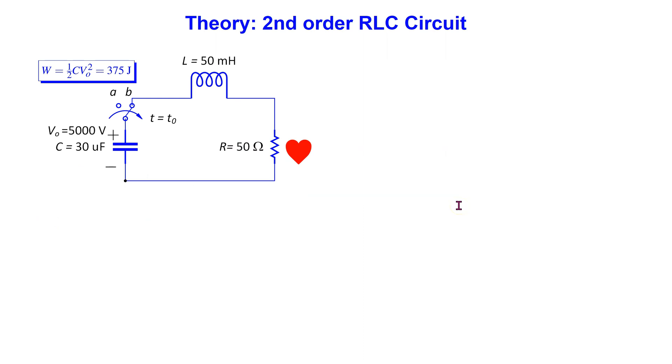Let us see how a defibrillator circuit can be theoretically analyzed. Typical component values are shown here. The capacitor value is 30 microfarad, the inductor is 50 millihenry, the patient is represented using a 50 ohm resistor. The capacitor is assumed to be charged to 5000 volts.